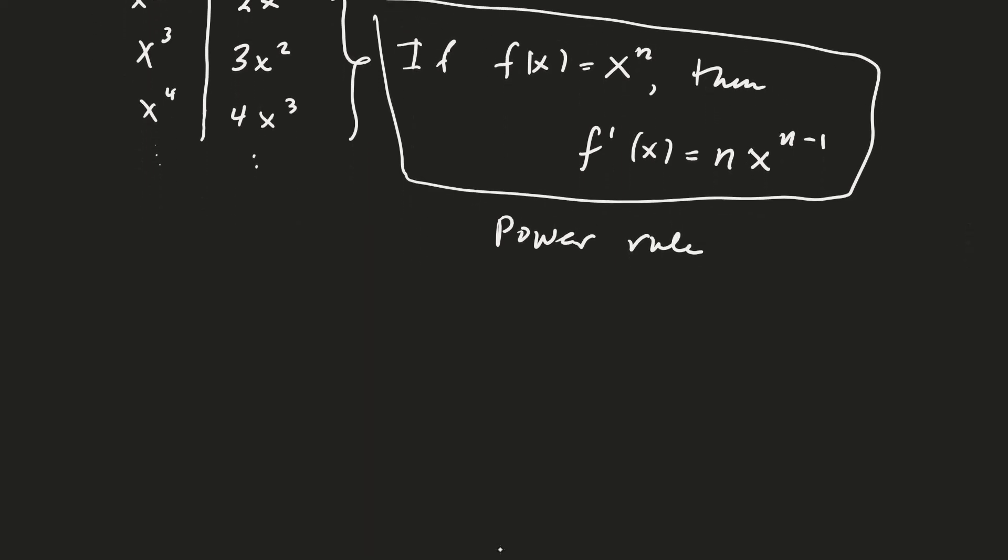For example, if f(x) = x^(3/2), then f'(x) would be 3/2 down front, and 3/2 minus 1 in the exponent. So that's (3/2)x^(1/2).